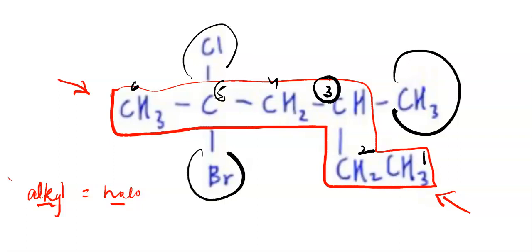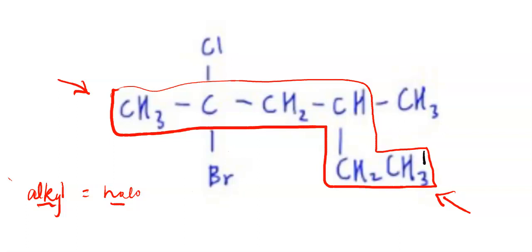But if I change this thing and I number it from here, 1, 2, 3, 4. So I get 5 and 6. I get branch at 2 and 4.